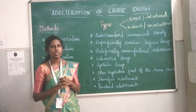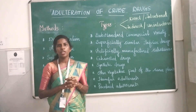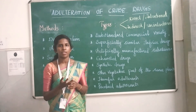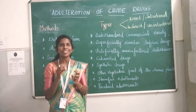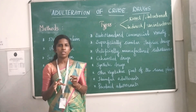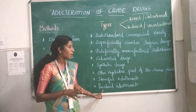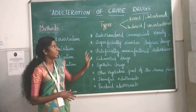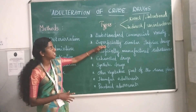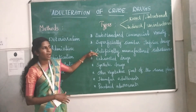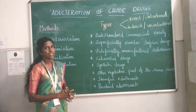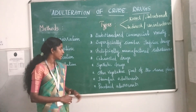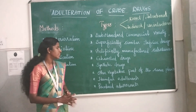The next type is powder adulants. For example, when making powder from bark, the bark powder has a brick color; mixing it with brick powder makes it difficult to identify the adulteration. These are the types of adulteration: substitution with substandard commercial variety, superficially similar inferior drugs, artificially manufactured substance, exhausted drugs, synthetic drugs, other vegetative parts of the same plant, harmful adulants, and powder adulants.